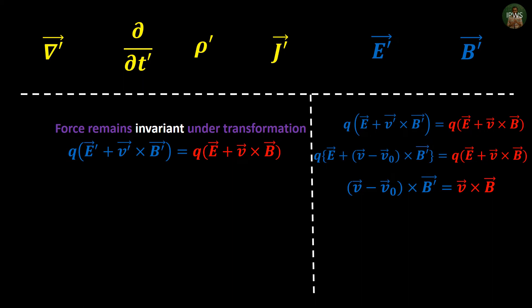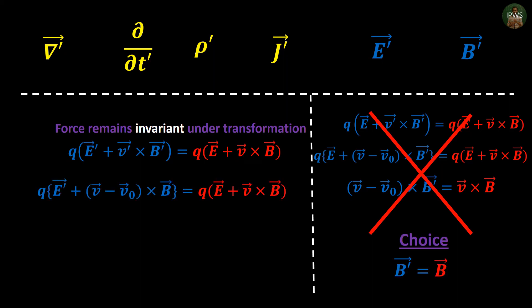It looks fine except you can't really substitute where the expression for B' is needed since it involves cross product in both sides. So we make a choice to keep magnetic fields equal, and when we substitute this in Lorentz equation it gives E' = E + v0 × B. Okay let's make a list of what transformations we have done until now.